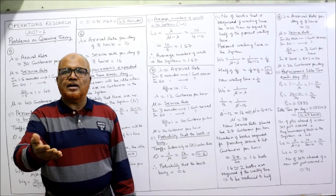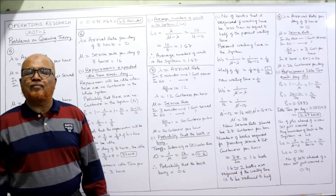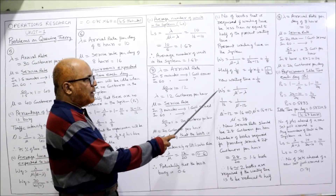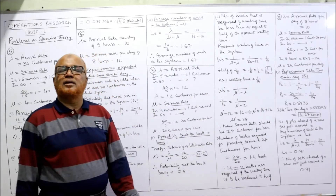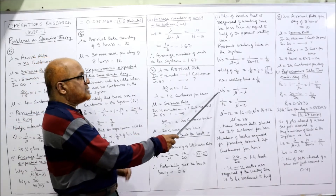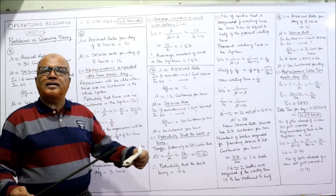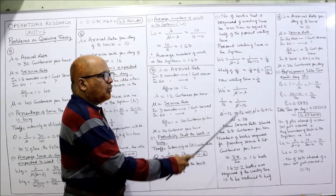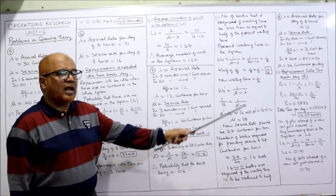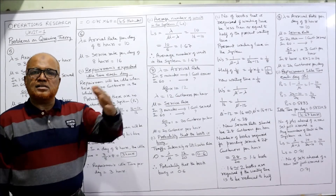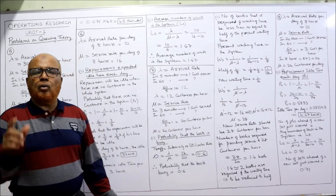We need to find how many booths are required to make the waiting time 1/16. Applying the formula for new waiting time: Ws' = 1 divided by (mu' minus lambda) = 1/16. Arrival rate lambda remains 12 customers per hour — it is not in our control. The only unknown is the new service rate mu'. Cross-multiplying: mu' minus 12 = 16, so mu' = 28 customers per hour.